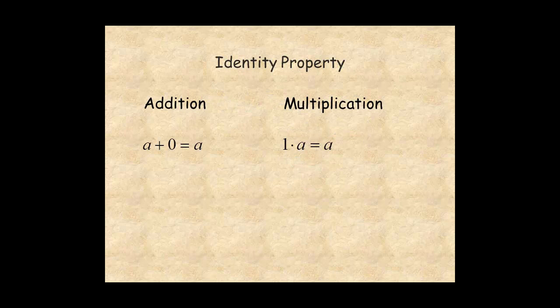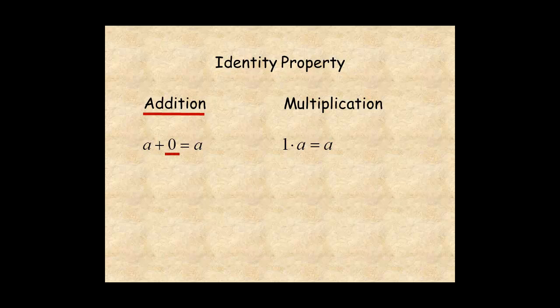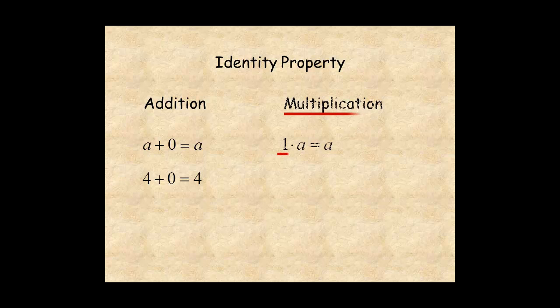The identity properties define identity elements for addition and multiplication. The identity element for addition is zero, which means you can add zero to any number and the result is the same number. For example, four plus zero is four. The identity element for multiplication is one, which means you can multiply any number by one and the result is the same. For example, one times five is equal to five.